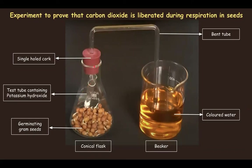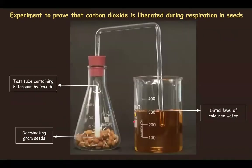A single-holed cork is put on the mouth of the conical flask, through which a bent tube is inserted. The other end of the bent tube is put in a beaker containing colored water. In the initial stage of the experimental setup, the level of water in the bent tube is at the level of the water in the beaker.